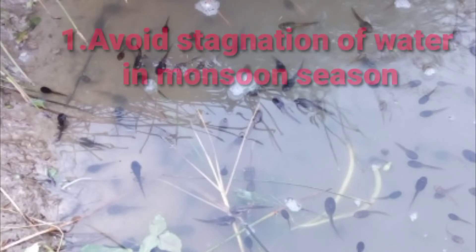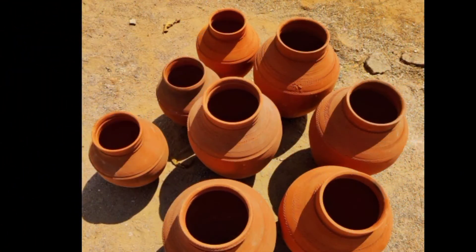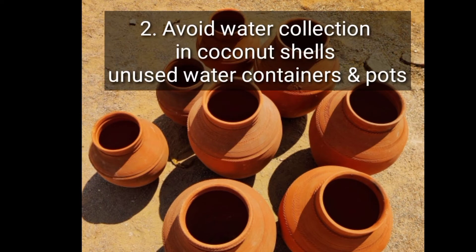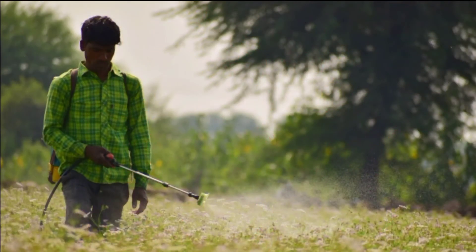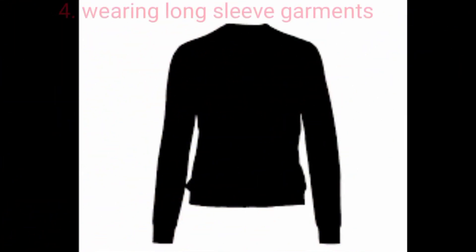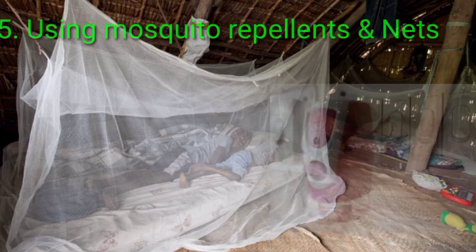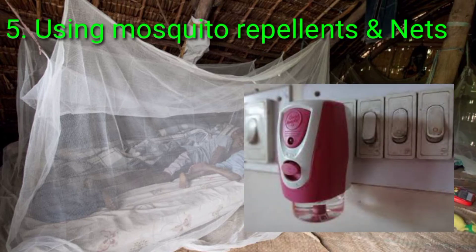Methods to prevent the disease: 1st method — keeping mosquitoes away by avoiding stagnation during monsoon season. 2nd method — avoid water collection in coconut shells, unused water containers, and pots. 3rd method — spray insecticides. 4th method — wear long-sleeved garments, and finally use mosquito repellents and mosquito nets.